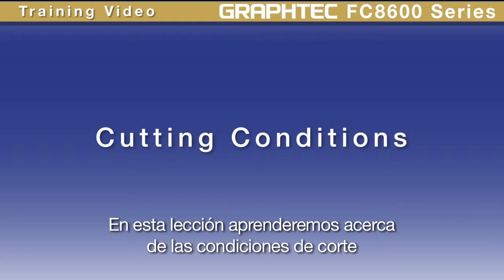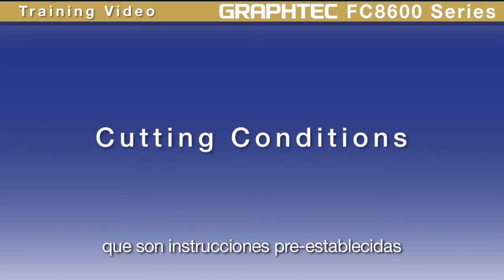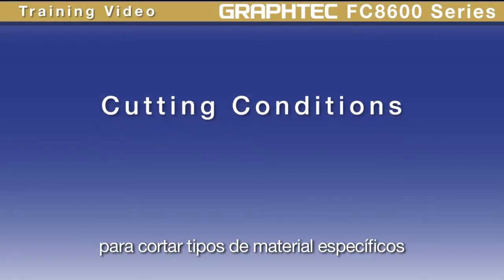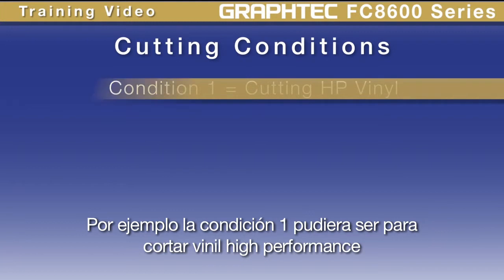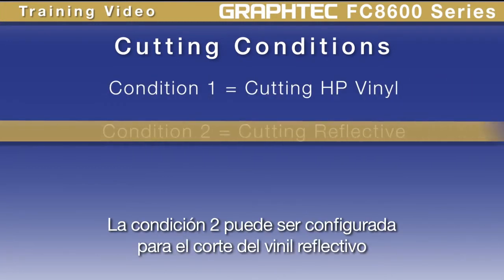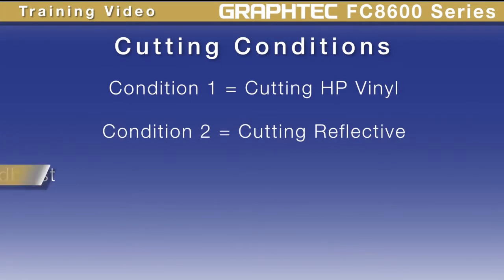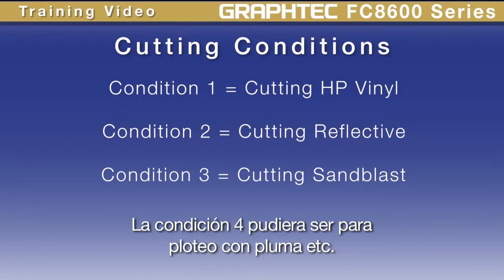In this lesson, we'll learn about the cutting conditions. Cutting conditions are like cutting presets. They can be used to set the plotter to the perfect condition for cutting specific types of material. For instance, condition 1 may be set for cutting high performance vinyl with normal cut settings. Condition 2 may be configured for cutting reflective vinyl, which may need a higher force. Condition 3 may be configured to cut sandblast resist material that may need a slower speed. Condition 4 may be for pen plotting, and so forth.